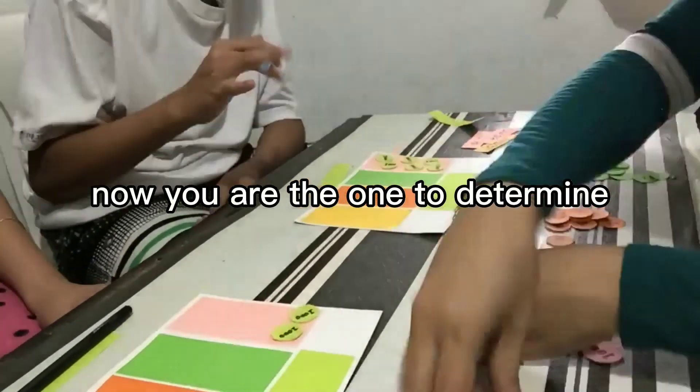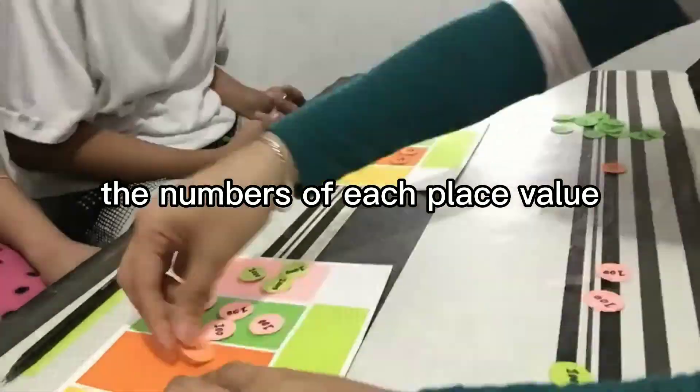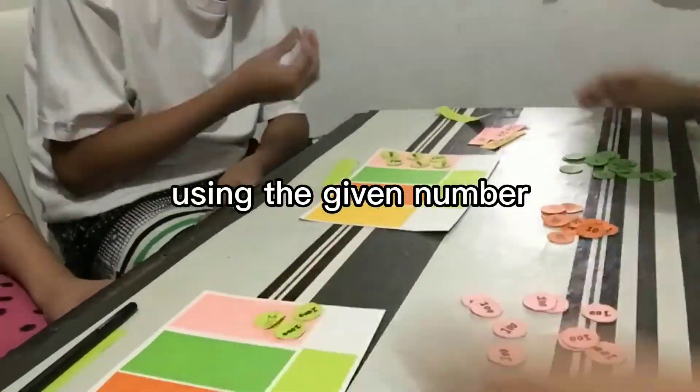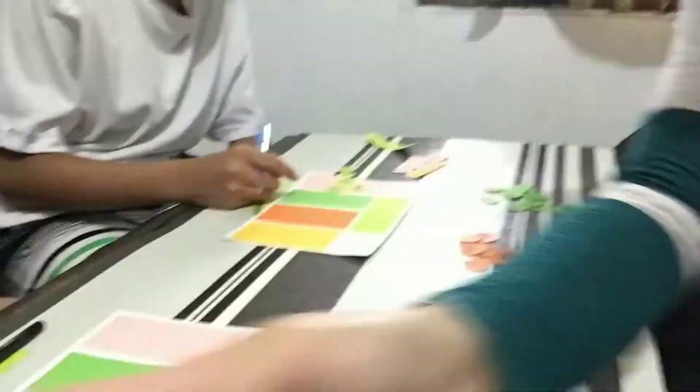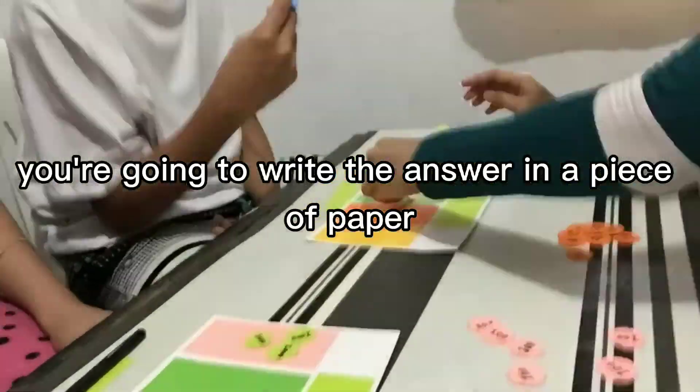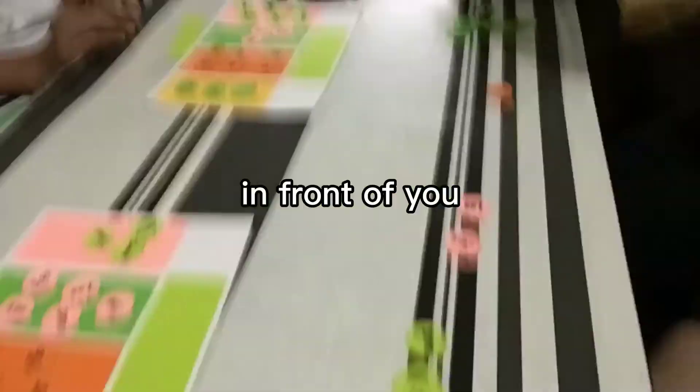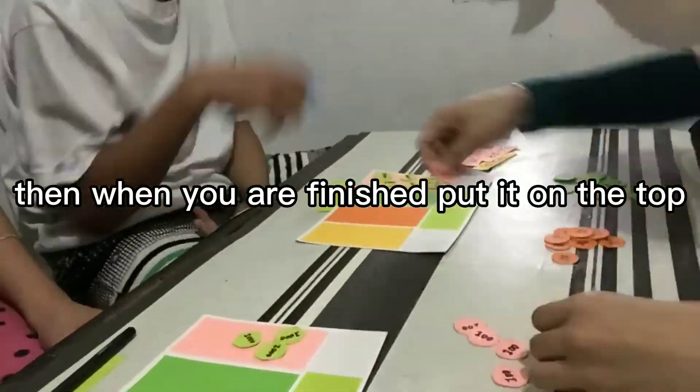Now, you are the one to determine the numbers of each place value using the given number disk inside the box. You're going to write the answer in a piece of paper in front of you. Then when you are finished, put it on the top. Let's start.